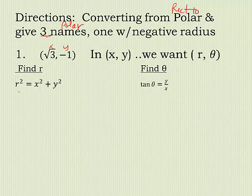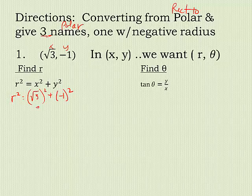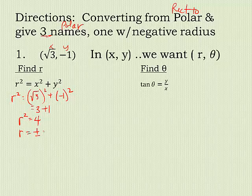So here's what you're going to do every single time. r squared is going to be your x coordinate squared plus your y coordinate squared. So this is 3 plus 1, which is 4, but I've got to take the square root, so r is plus or minus 2.